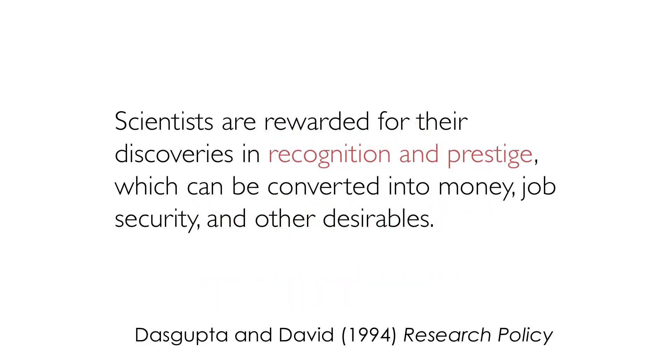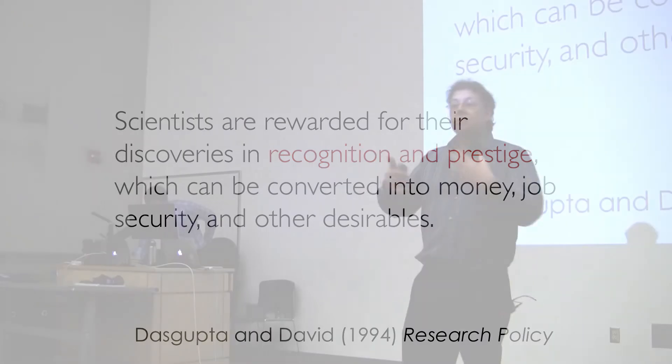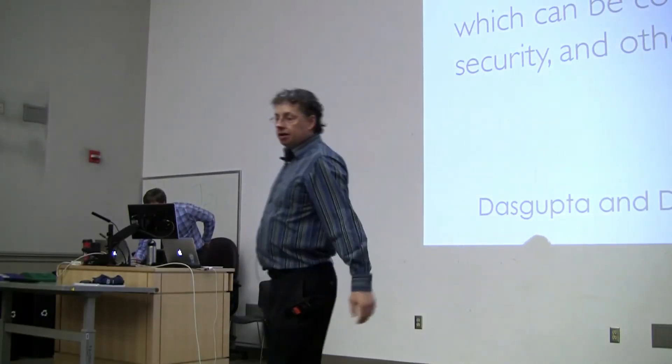So the first thing to realize is how are scientists rewarded? They're not rewarded in stock options. They're rewarded, essentially, for the discoveries that they make in terms of recognition and prestige. And as your name becomes more and more recognized, as you become more and more prestigious, then you can convert that recognition and prestige into things like salary, or a permanent job, or other kind of desirable things. Everyone likes to be the big guy on the block, and that's desirable in and of itself.